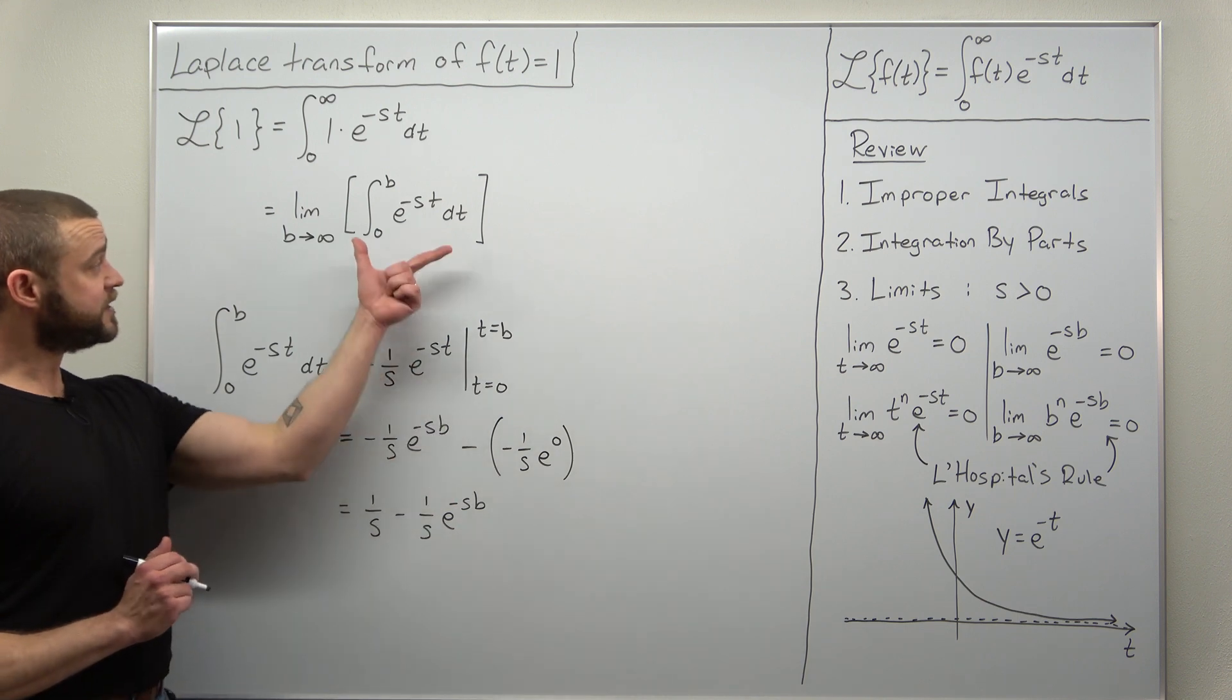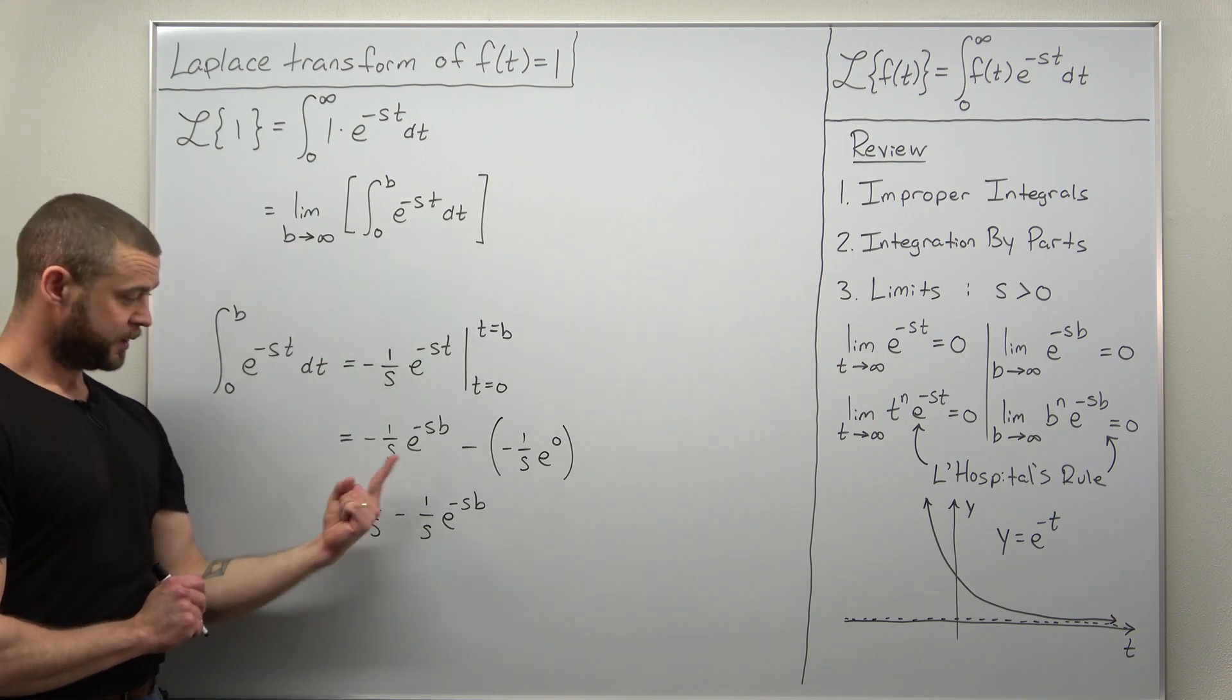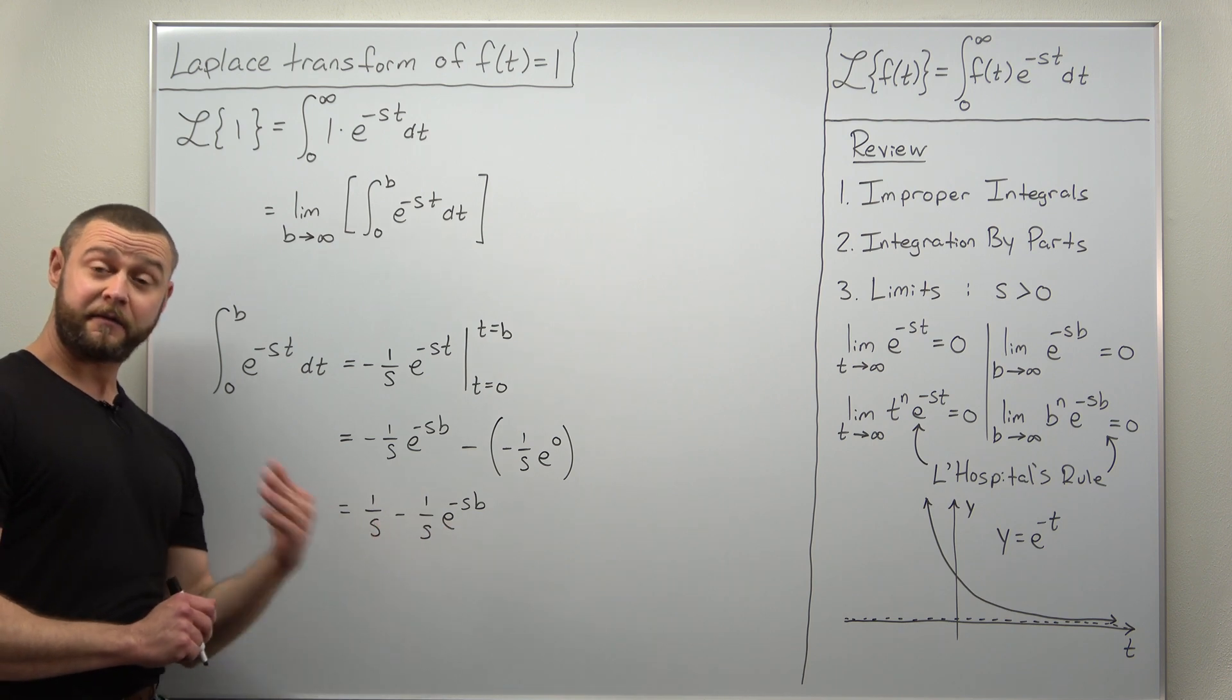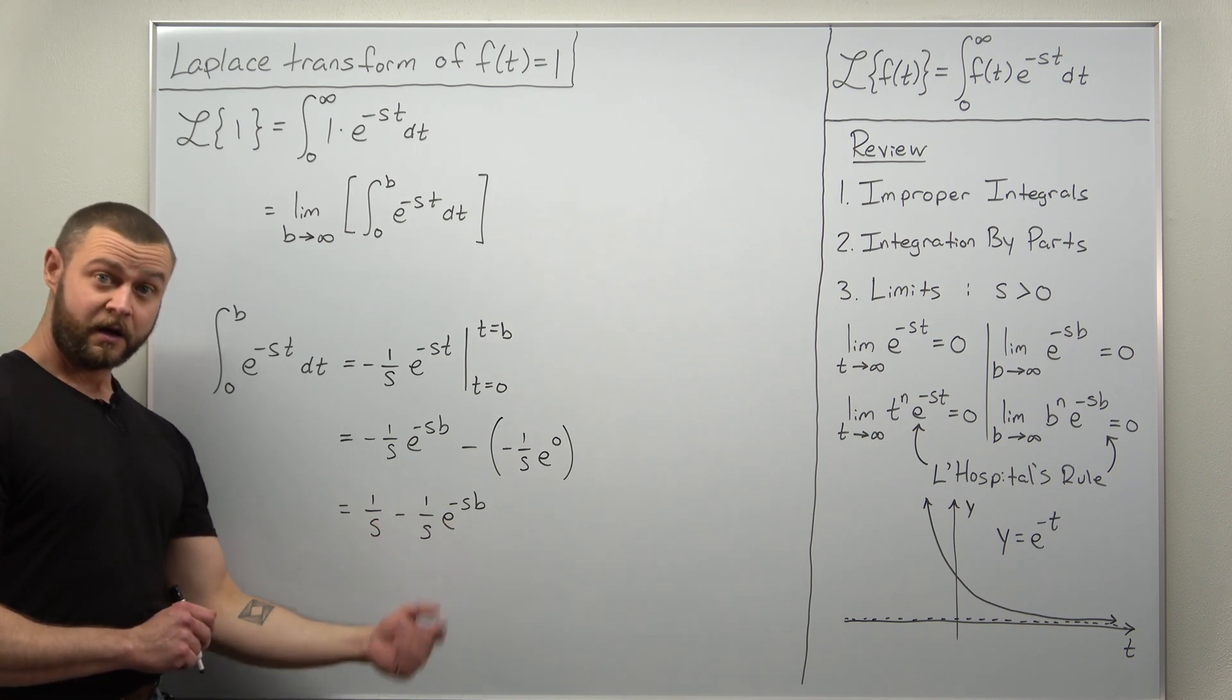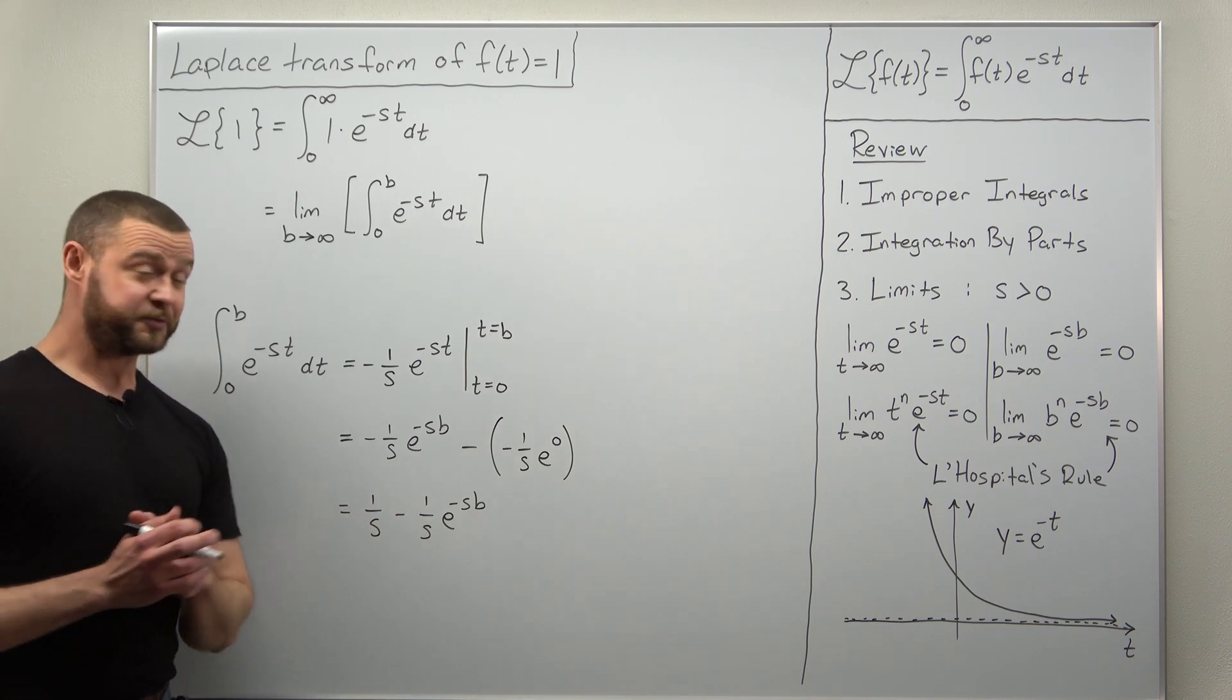All right, that is the first part, step one: evaluate the integral. Now we can go to step two: evaluating the limit. And we're going to take the limit as b approaches infinity for this entire function here: one over s minus one over s times e to the negative s b.